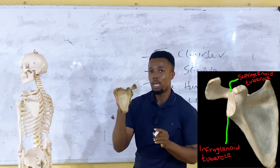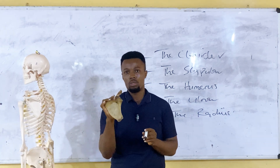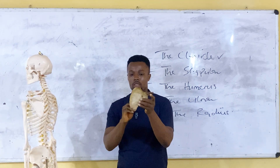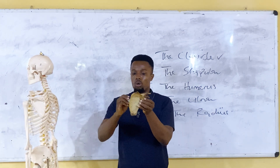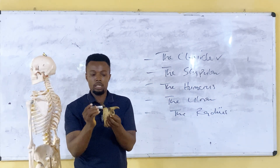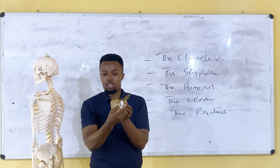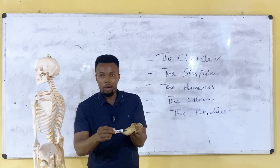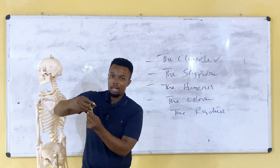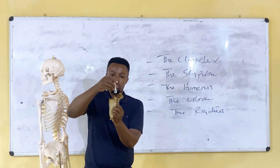We've been able to see all the important features of the scapular as a bone, ranging from the medial border, the lateral border, the superior angle, the inferior angle, the acromial process, the coracoid process, the spine of the scapular, the suprascapular notch, the supraspinous fossa, the infraspinous fossa, the subscapular fossa, the glenoid cavity, the neck of the scapular, and the supraglenoid and infraglenoid tubercles.